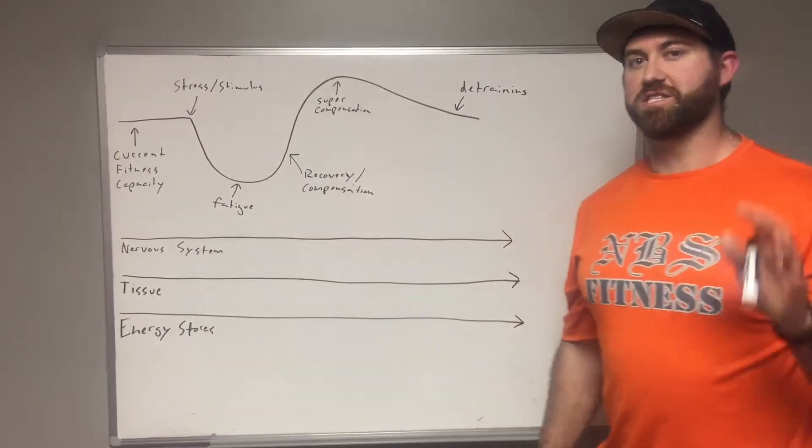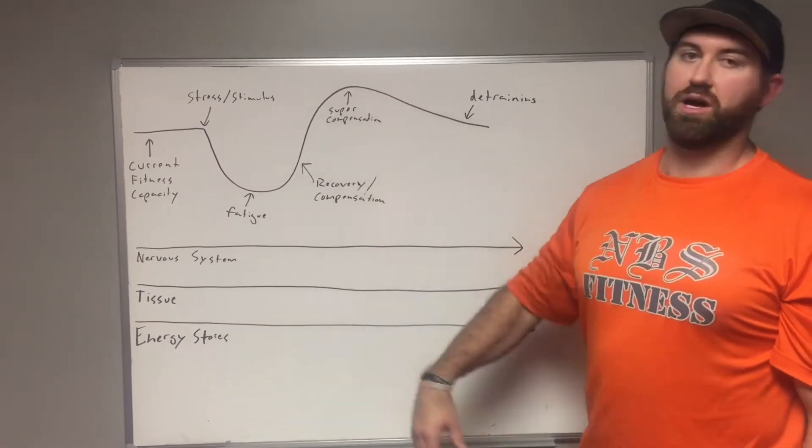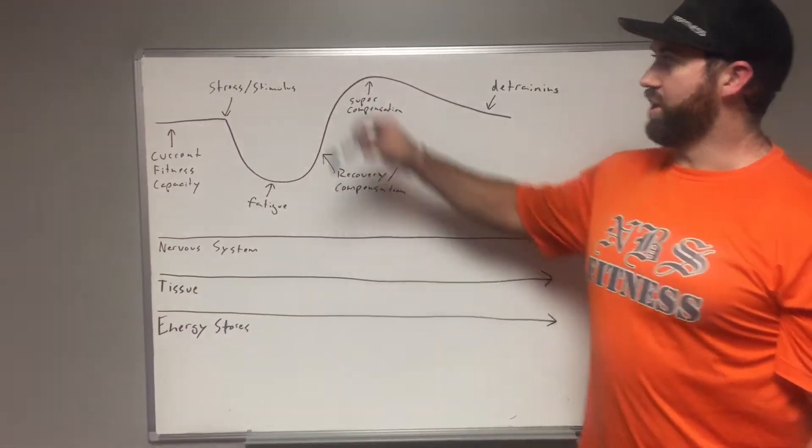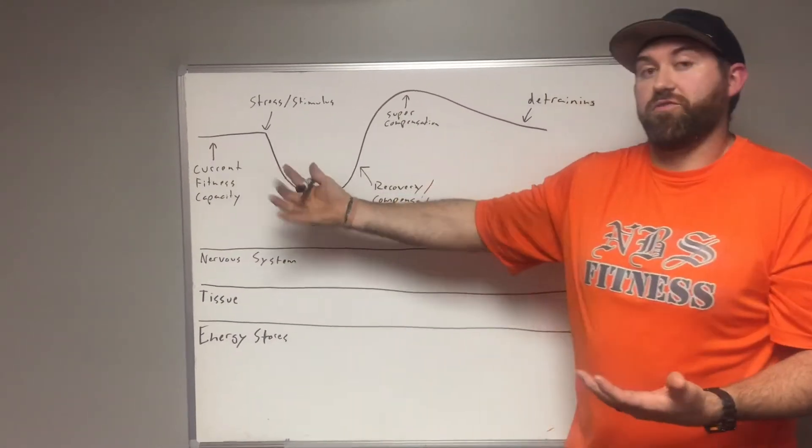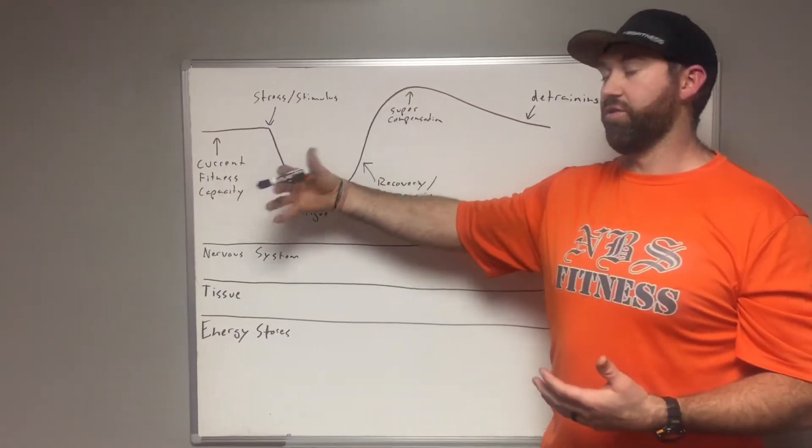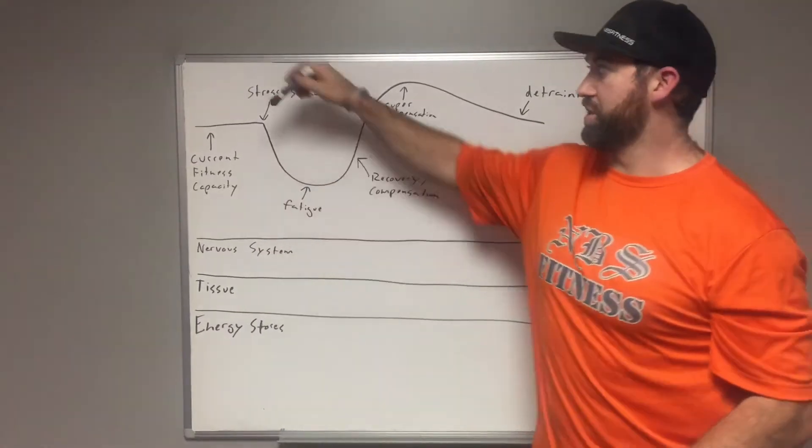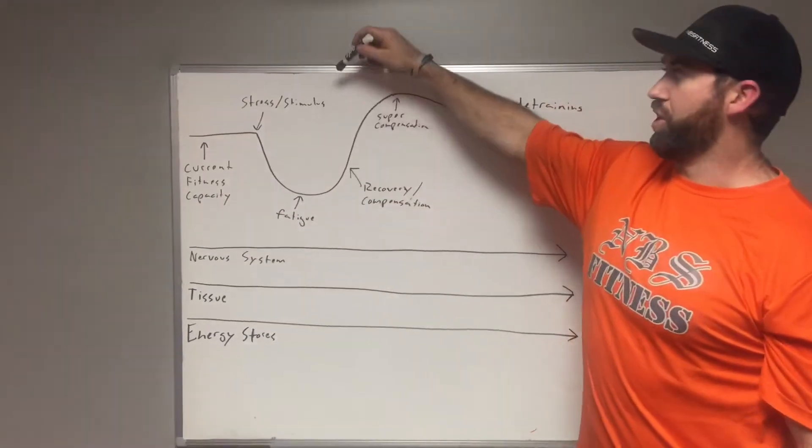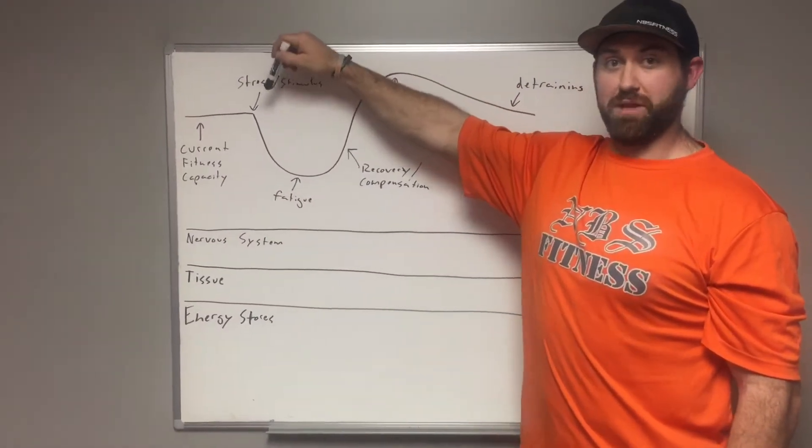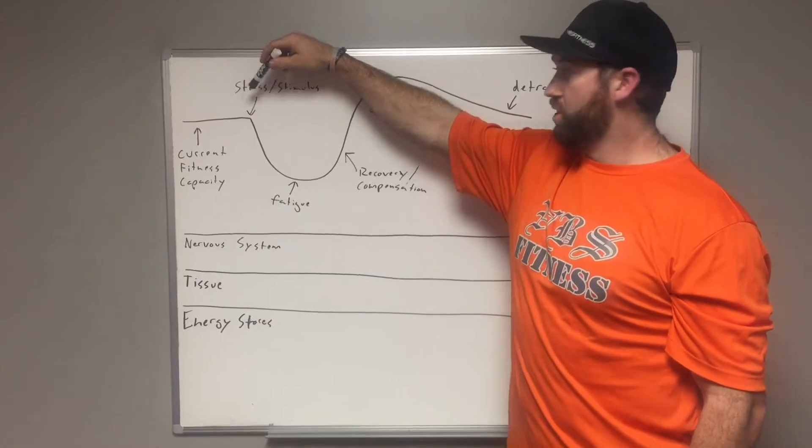This is the general adaptation syndrome model applied to fitness. Here we see our current fitness capacity, whatever fitness capacity we're currently referring to. It could be strength, for example. This could be your current one rep max back squat.